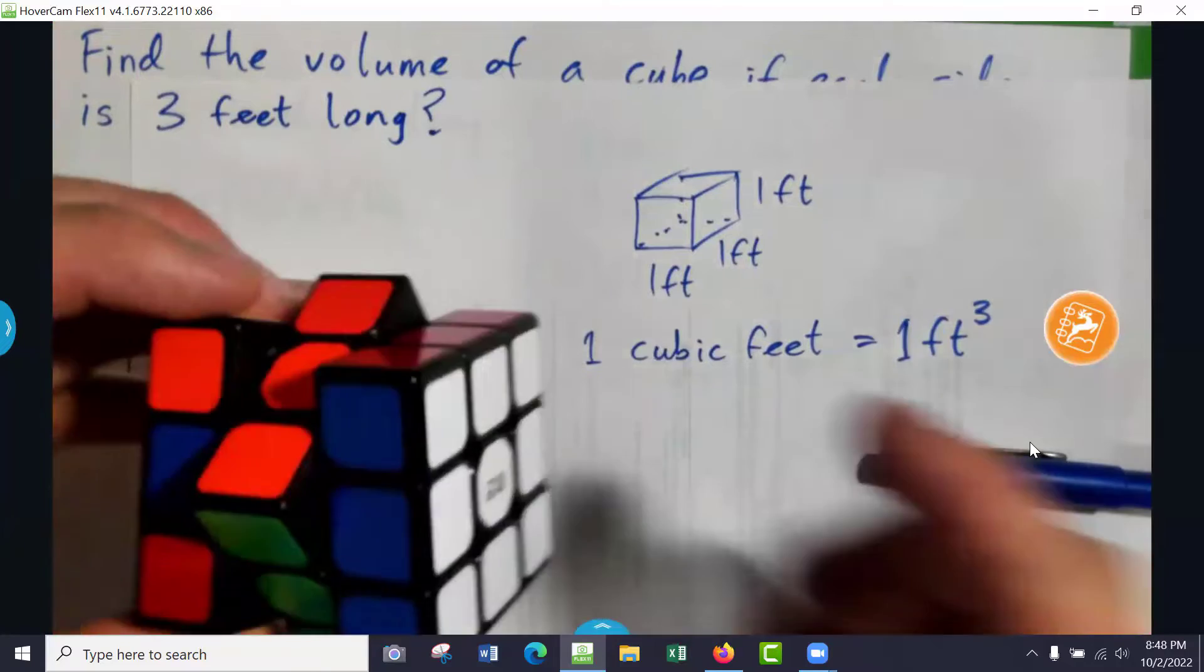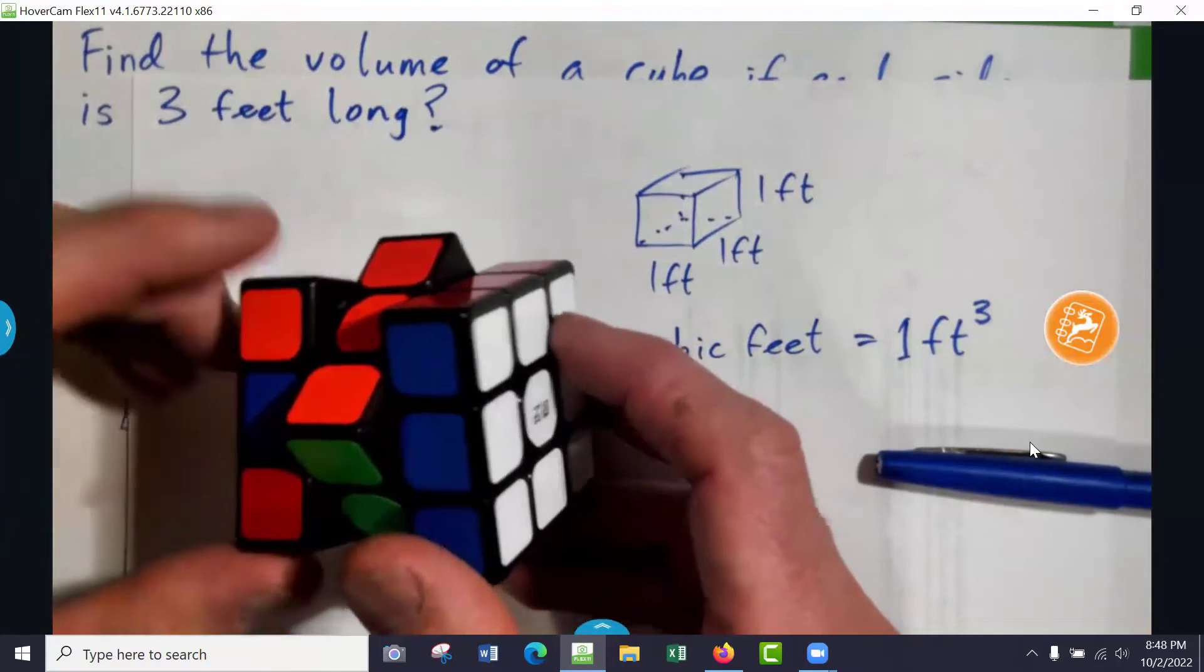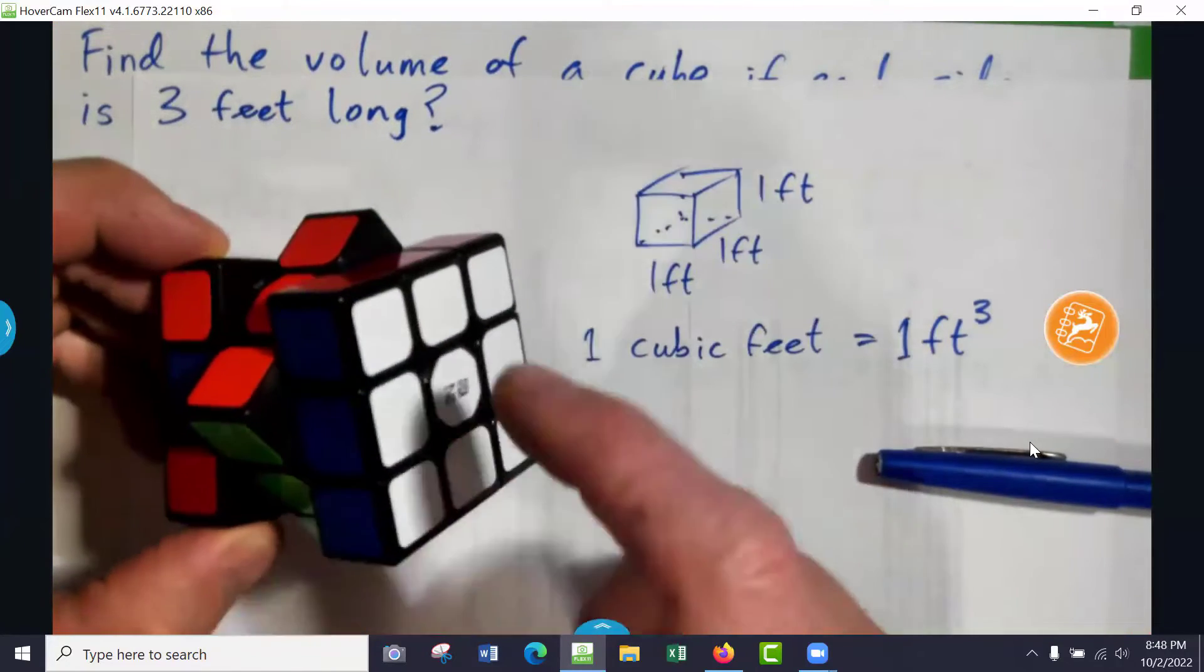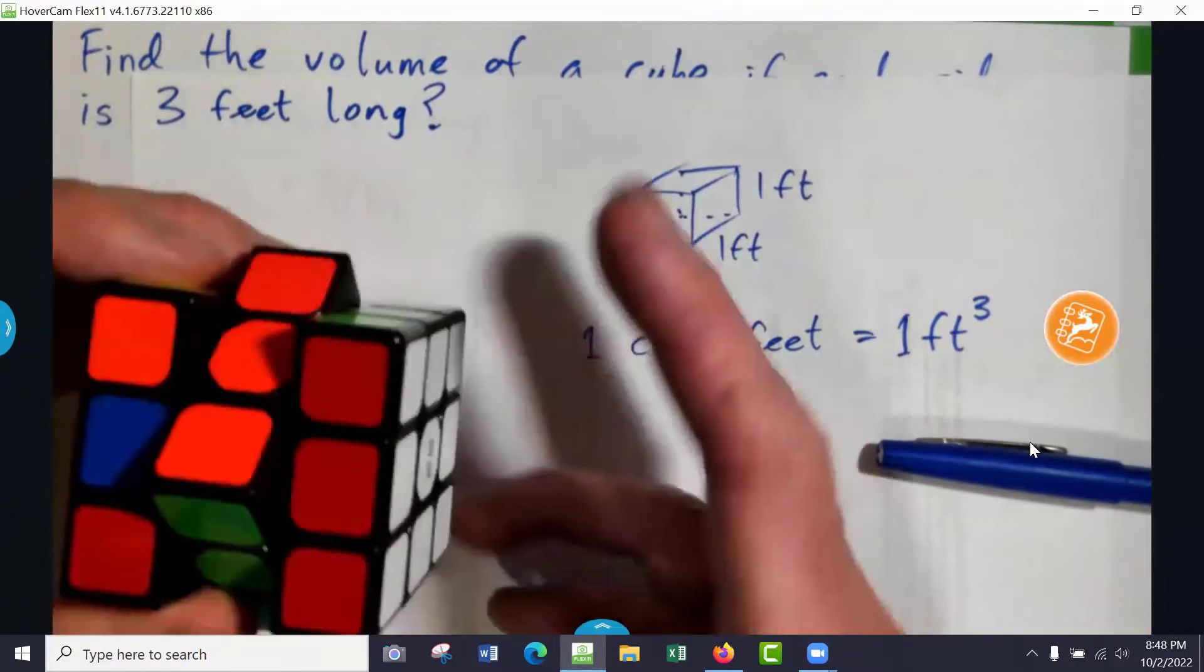Okay, so I'll explain it now. It's the same as we looked at before with imagining these were cubic inches. You've got 1, 2, 3, 4, 5, 6, 7, 8, 9 on this layer.